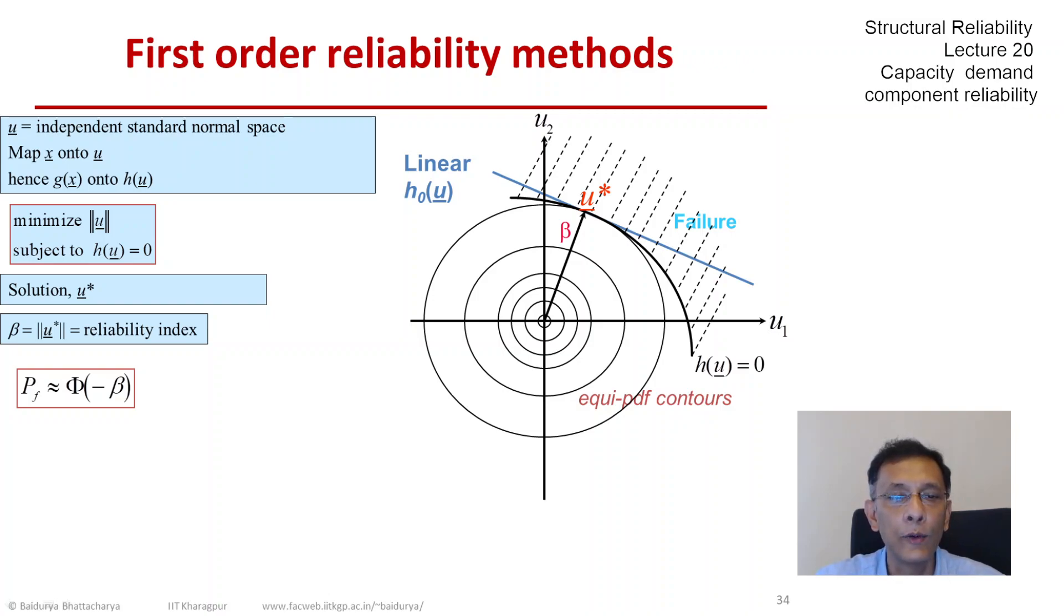The approximately equal sign is due to the fact that we have linearized a non-linear function h. So if h was equal to h_0, then that failure probability would be exact, but it is not in general. That is where one of the approximations come from.